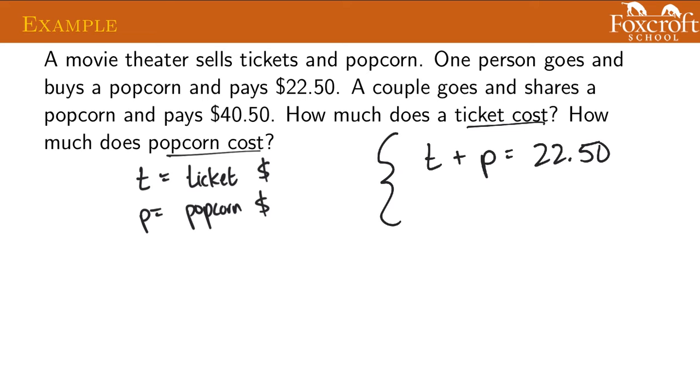A couple is going to go, so a couple is two people, so they're going to have to buy two tickets, and they're going to share a popcorn, so they also just have one popcorn, and it's going to cost them $40.50. Based on the fact that you've passed a bunch of skill checks about solving these, I'm not going to cover how to solve them. I'm just going to use a graph. I'm going to graph these two equations, and we learned this early on in this unit. If you graph the two equations, where the two things cross is the answer, and our answer is that the ticket price should be $18, and the popcorn price should be $4.50.